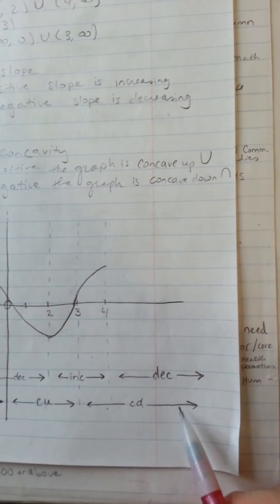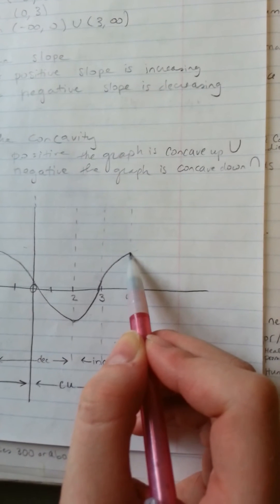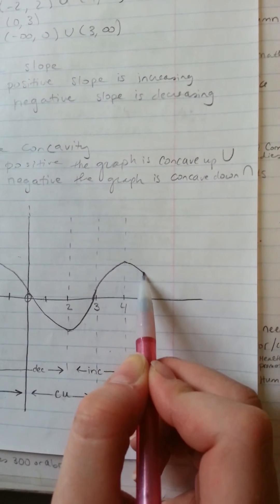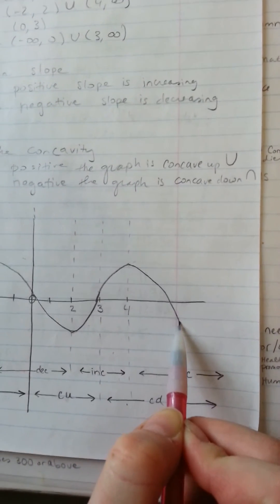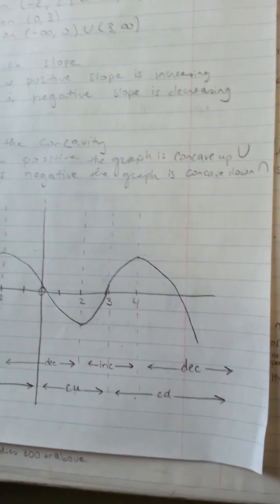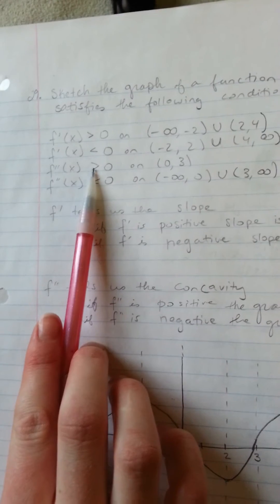And in the final section, we'll be decreasing concave down. And that is how you graph the function of all these conditions.